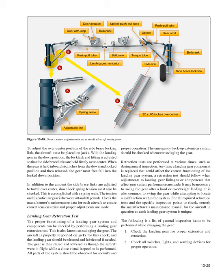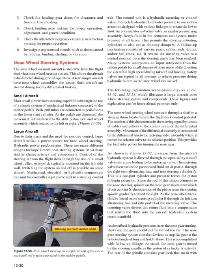General inspection items when swinging the gear: 1) Check landing gear for proper extension and retraction. 2) Check all switches, lights, and warning devices for proper operation. 3) Check landing gear doors for clearance and freedom from binding. 4) Check landing gear linkage for proper operation, adjustment, and general condition. 5) Check the alternate/emergency extension or retraction systems for proper operation. 6) Investigate any unusual sounds such as those caused by rubbing, binding, chafing, or vibration.